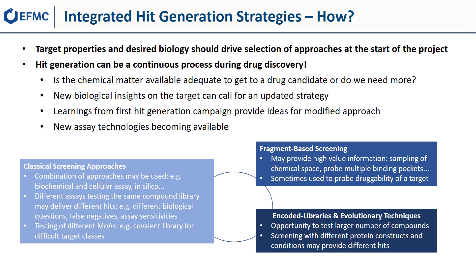For example, if your target works through a pathway that you've now better characterized, maybe you can run a cell assay looking at this pathway. Also very important, the learnings from the first hit generation campaign really provide ideas on how to do it better next time. And new assay technologies may become available — not necessarily brand new ones from the literature, but maybe you couldn't have a binding assay before because you couldn't access your protein, and now you can, so why not think about running a binding assay as a hit generation approach?